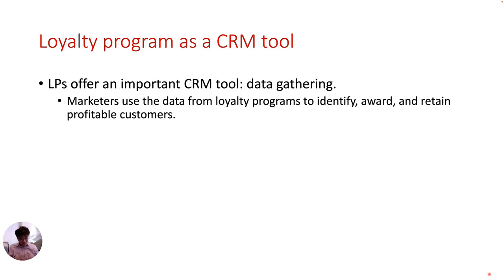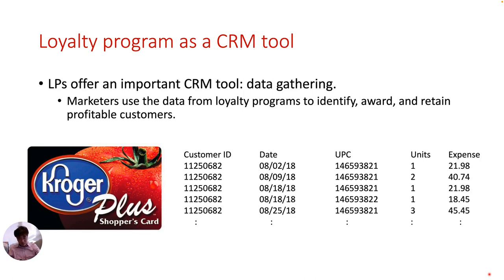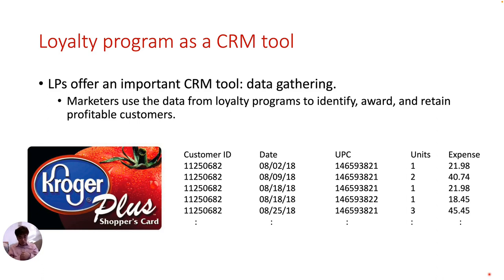In CRM, a loyalty program plays another important role: data gathering. For example, when you are shopping at Kroger, you may scan your Kroger shopper's card at checkout. Your card works as an ID card, so Kroger can record the list of what you buy on your ID. This becomes great information for Kroger — it can track your purchases over time. Kroger figures out what will be the best deal for you in your next shopping and prints out the deal with your receipt. That is, by the use of a loyalty program, marketers are able to identify, reward, and retain profitable customers.